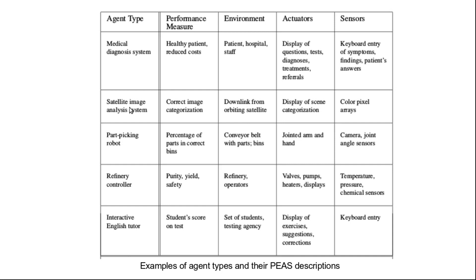For the medical diagnosis system, the performance measure would be whether it is having healthy patients and whether it is reducing the cost. The environment would include the patient, hospital, and staff. The actuators would include display of questions that the patient can answer, tests, display of diagnosis, treatment, and referrals. And the sensors would include keyboard entry of symptoms by the patient, findings of the tests, and patients' answers to questions being asked.